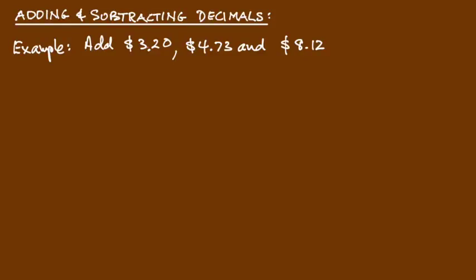In this lesson we're going to have a look at how we add or subtract decimals. Now our example here is add $3.20, $4.73 and $8.12. Now they're money amounts or currency, but they're decimals. They've got a decimal point in them. So this is an example of adding decimals together.